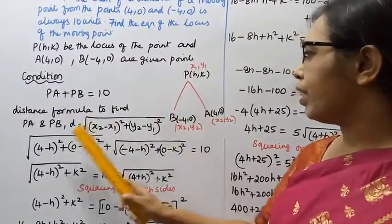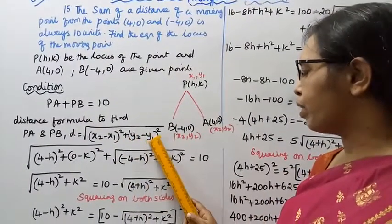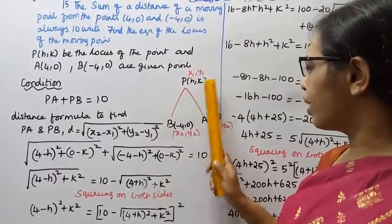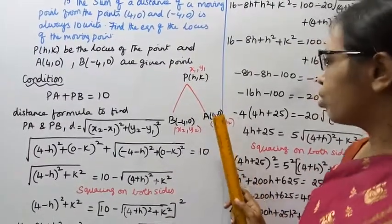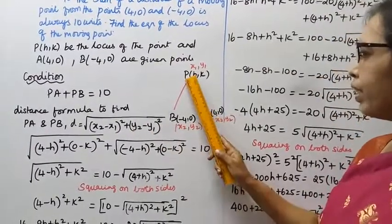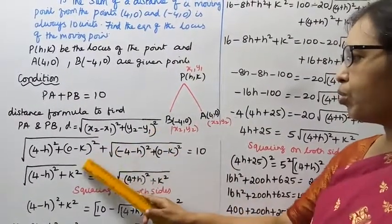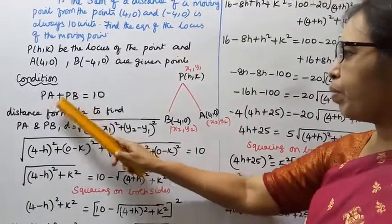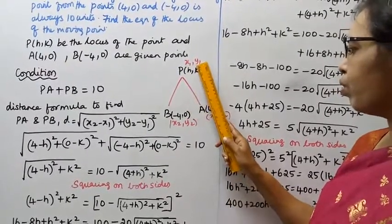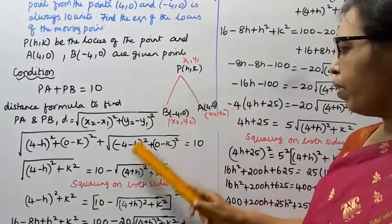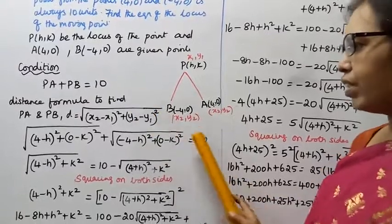Using the distance formula: root of (x2 - x1) squared plus (y2 - y1) squared. For PA, substituting (h, k) and (4, 0): PA equals root of (4 - h) squared plus (0 - k) squared. For PB, substituting (h, k) and (-4, 0): PB equals root of (-4 - h) squared plus (0 - k) squared. So PA plus PB equals 10.